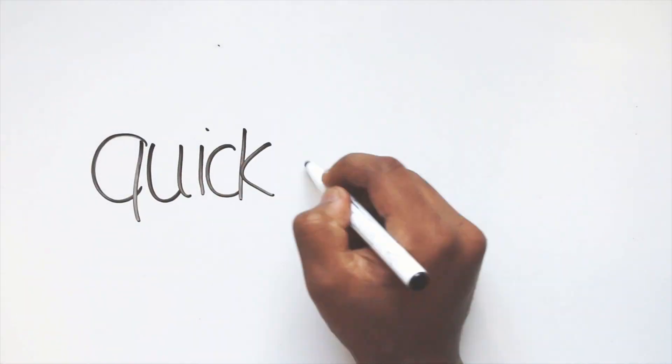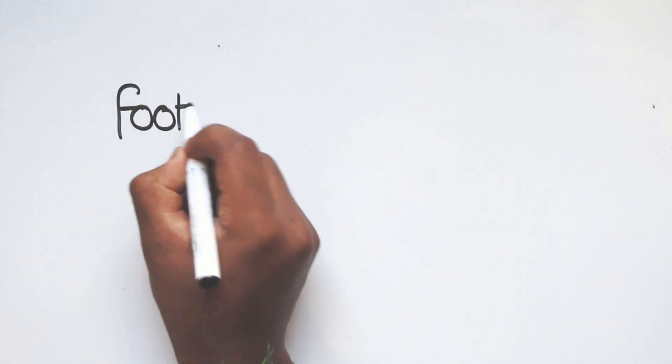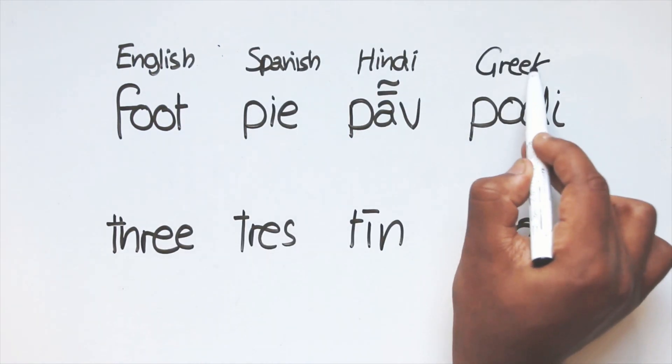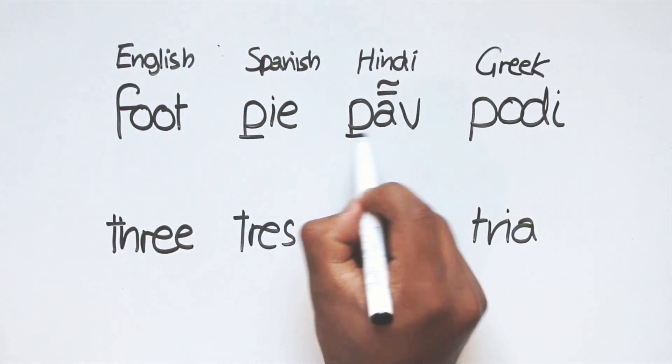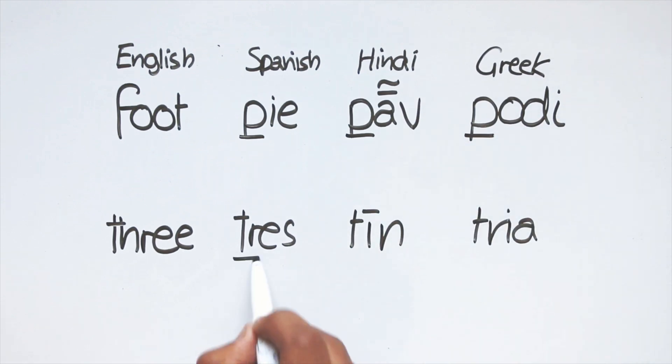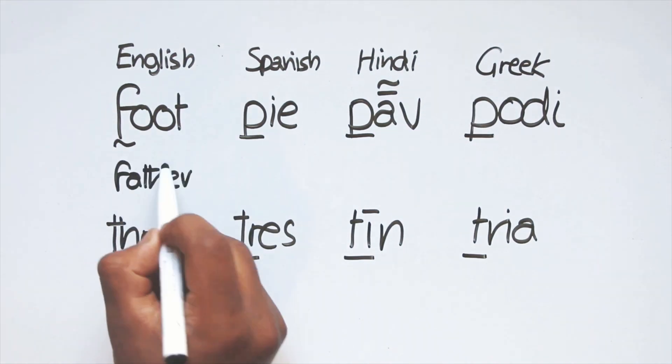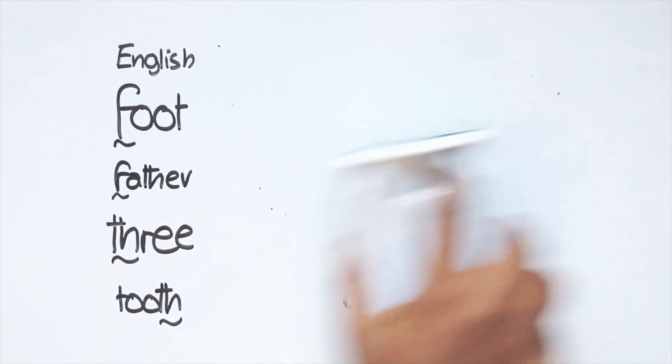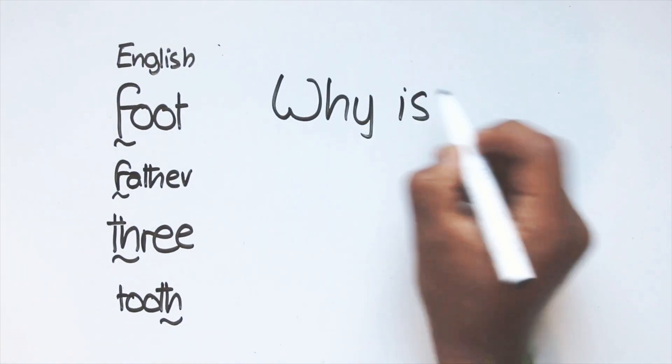But first let's look at a quick problem. Here are the words for foot and three in English, Spanish, Hindi and Greek. In both sets you get nearly the exact same consonants in Spanish, Hindi and Greek with something different in English. This happens the exact same way for the words father and tooth. Why is English so different from the others? By the end of this video you'll have a better understanding of what is going on.